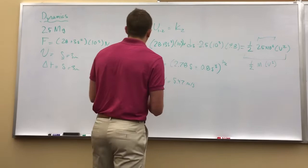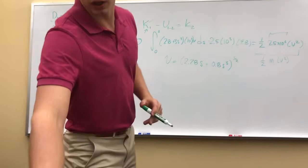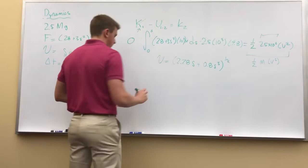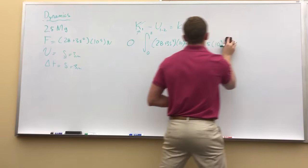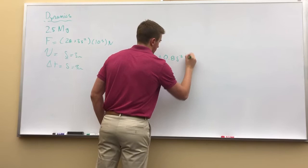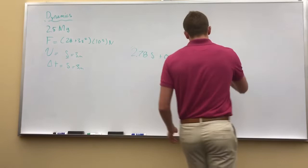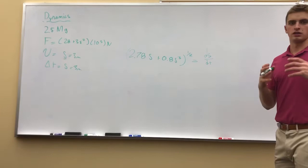Now we're not done because what they really want from us also in the second part is our change in time. In which case we're going to go back and use this same equation. Let's actually clean this up, let's erase this. You guys can go back for me to find this. 2.78 s plus 0.8 s cubed raised to 1 half is equal to ds over dt. This is our change in height over time. We understand that velocity is changing height over time, acceleration is changing velocity over time - sorry, change in position for velocity. Velocity is changing position over time.